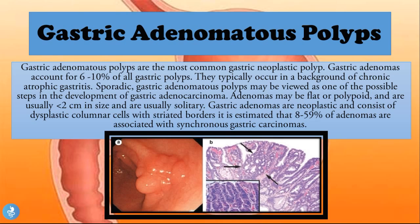Gastric adenomatous polyps typically occur in a background of chronic atrophic gastritis. Sporadic gastric adenomatous polyps may represent one of the possible steps in the development of gastric adenocarcinoma. Adenomas may be flat or polypoid, are usually less than two centimeters, and are typically solitary. They consist of dysplastic columnar cells with striated borders. It is estimated that 8 to 59 percent of adenomas are associated with synchronous gastric carcinomas, making this quite an alarming polyp to find.